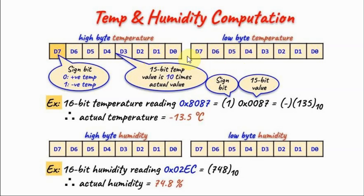Temperature is represented by two bytes: the low byte and the high byte. The absolute value of temperature is represented by the first 15-bit value, while the sign is represented by the most significant bit. If the sign bit is 0, then the temperature is positive. If the sign bit is 1, the temperature is negative.